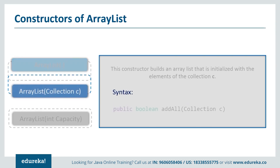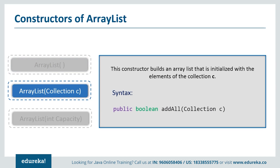The second constructor is ArrayList(Collection c). This constructor is used to add all the elements of the specified collection c to the current ArrayList — that is, you can add all elements from the specified collection c into the current ArrayList.